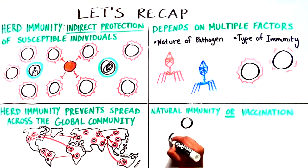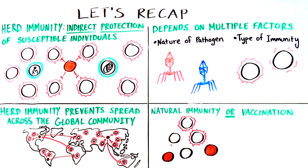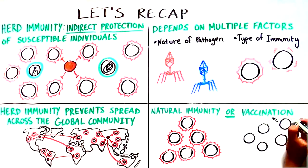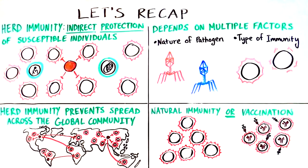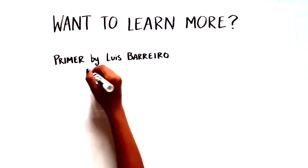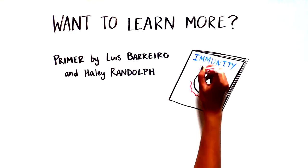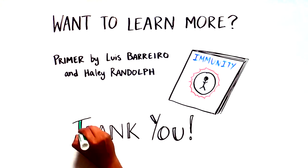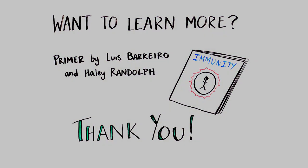For some pathogens, the herd immunity threshold can be gradually established via natural infection. But for most, effective vaccinations are critical to reach the numbers necessary to achieve herd immunity. You can learn more about herd immunity in the primer by Luis Barrero and Haley Randolph in the journal Immunity. Thank you for joining us today. We are Eureka Science, and this is a collaboration with Cell Press.